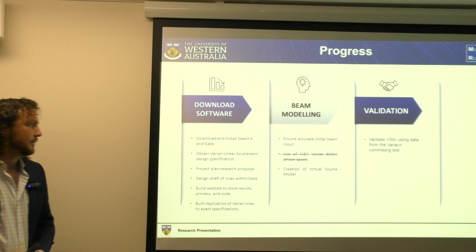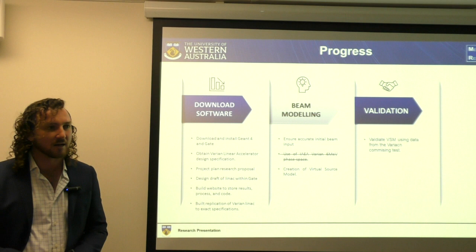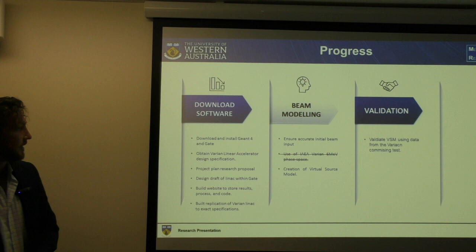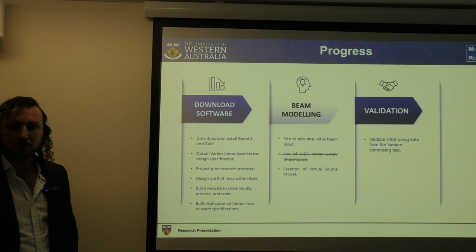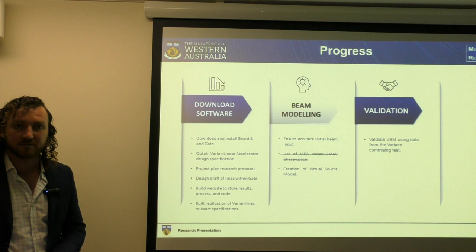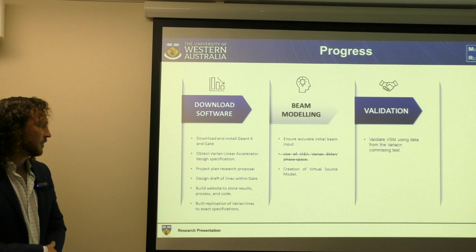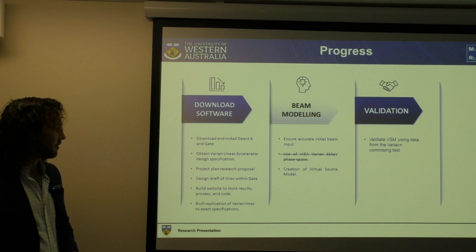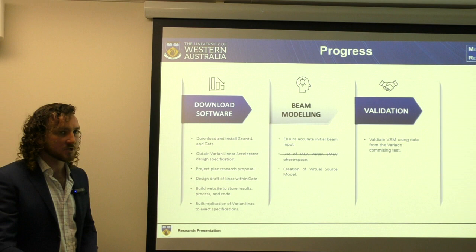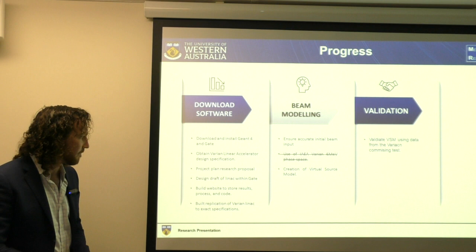So where are we at? In terms of the first step — download software — that was probably the hardest one. We've successfully installed GATE, which is a subsidiary of GEANT4, so both have been installed together. We've obtained the Varian Linear Accelerator design specifications and built that within our own model in GATE. We've got a project plan with KPI metrics and targets in an Excel file. We're also building a website to store results and keep a log, which feeds into having verifiable and validated processes.